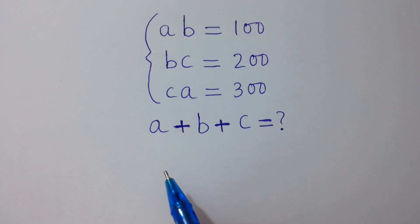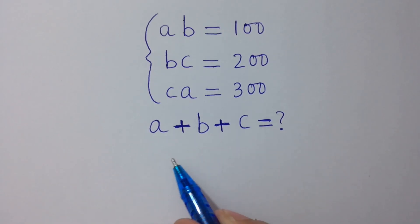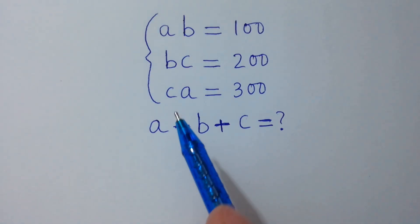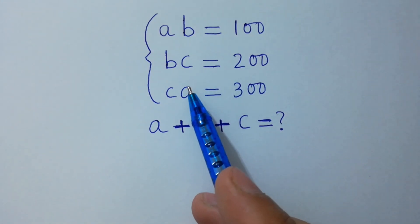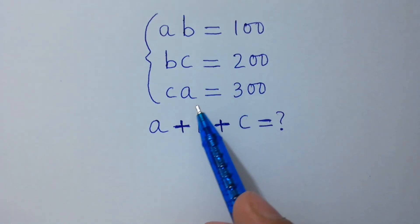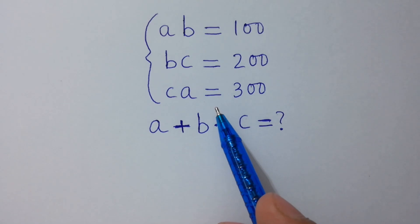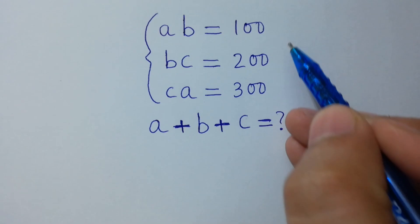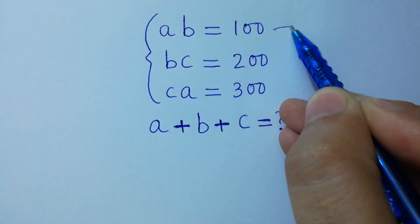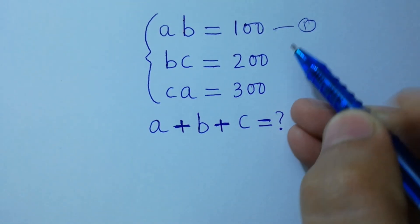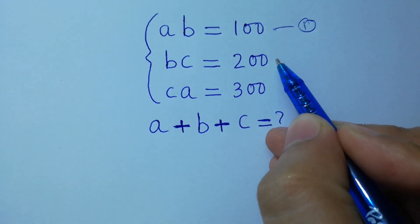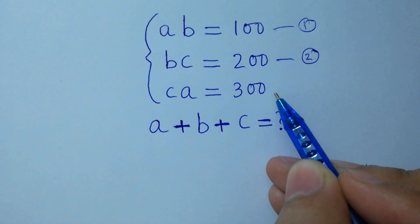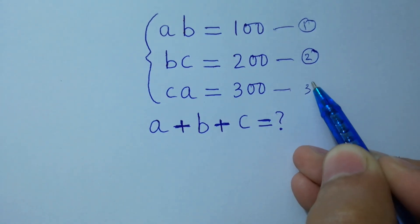Hello friends. Find the value of a plus b plus c if ab equals 100, bc equals 200, and ca equals 300. Let's solve it. Suppose that ab equals 100 is the first equation, bc equals 200 is the second equation, and ca equals 300 is the third equation.